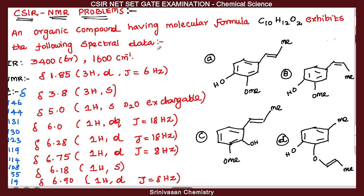An organic compound having molecular formula C10H12O2 exhibits the following spectral data: IR frequency values, NMR chemical shift values, spin multiplicity and coupling constant values, and C13 chemical shift values.